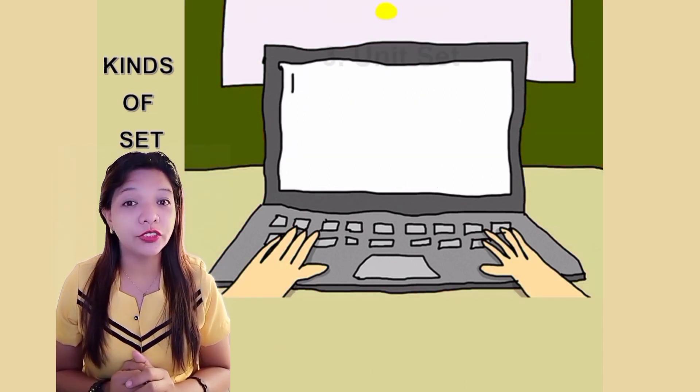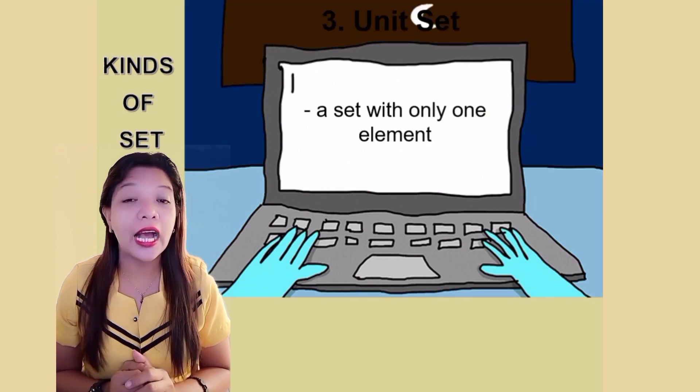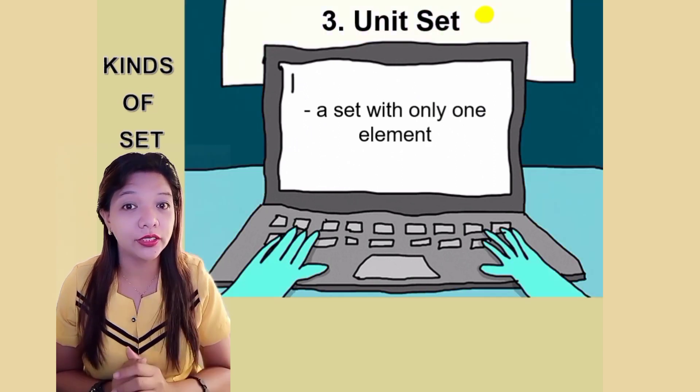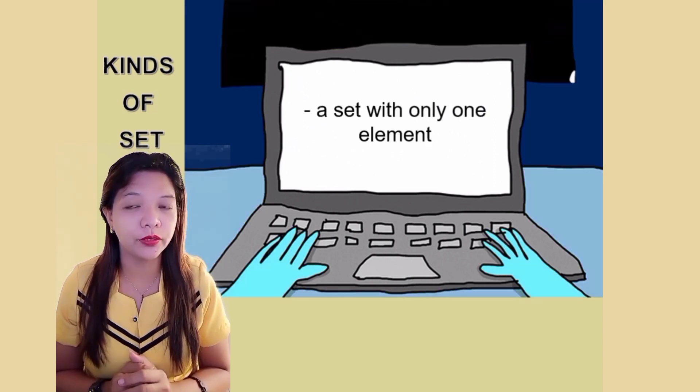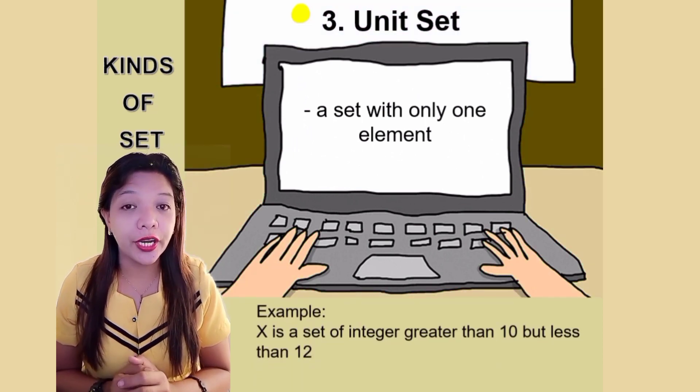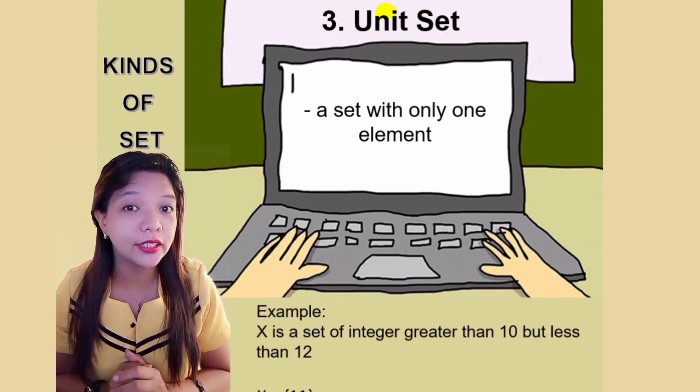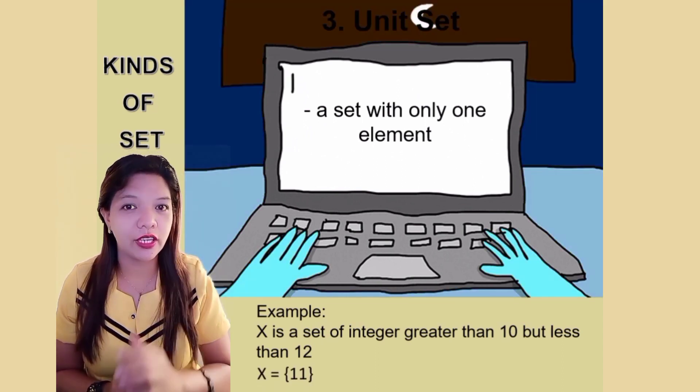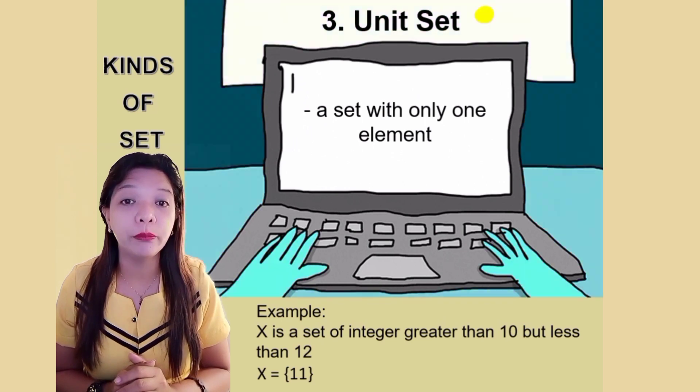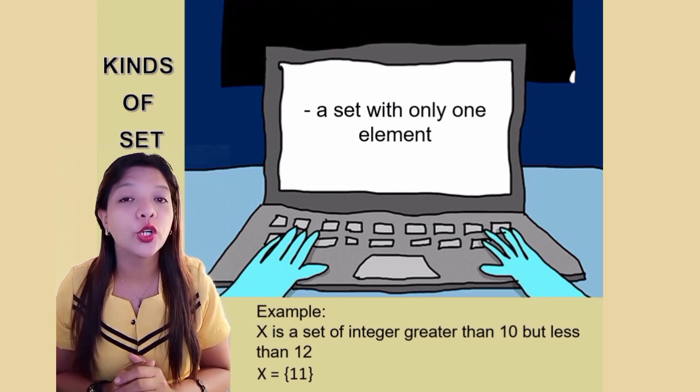Our third kind of set is unit set, a set with only one elements. Let's have our example. X is a set of integer greater than 10 but less than 12. What is that? Yes, 11. X is equals to open brace 11, close brace.